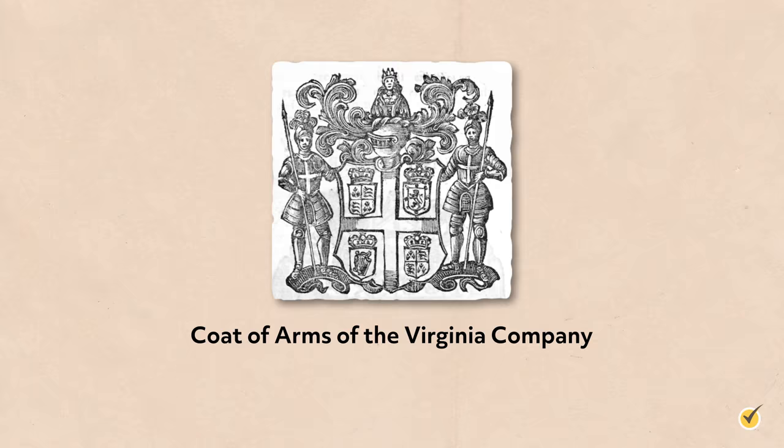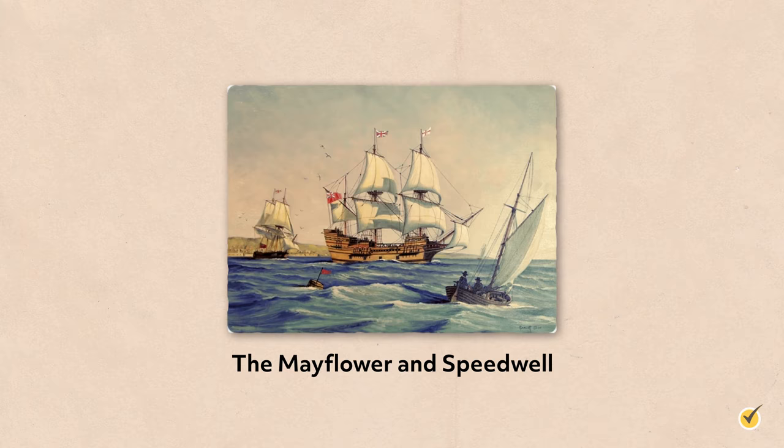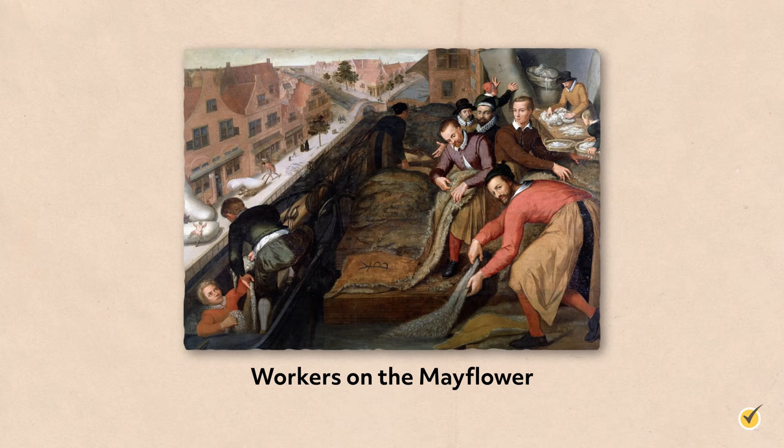Two ships were contracted to carry 130 passengers to the New World: the Mayflower and the Speedwell. The passengers aboard the two vessels were either saints or strangers. The saints, as they referred to themselves, were the pilgrims making the voyage for religious purposes. The strangers were the non-Puritan passengers who were simply seeking their fortune in the New World. There was also a handful of indentured servants aboard — workers who paid for their journey by agreeing to a period of unpaid service.